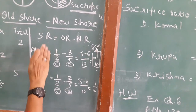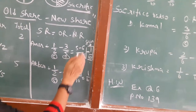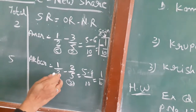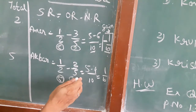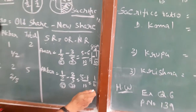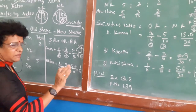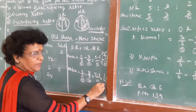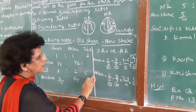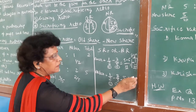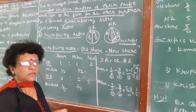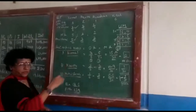When using the sacrifice formula, if you get a minus answer, it means that partner is gaining. Now for Akbar: old share is 1/2 minus new share 2/5. LCM is 10, so 5/10 minus 4/10 equals 1/10. Here the answer is positive, so Akbar is actually sacrificing. So the answer is: Akbar is sacrificing 1/10 portion and because of his sacrifice, Omar is gaining 1/10. The loss of someone becomes the gain of someone else.